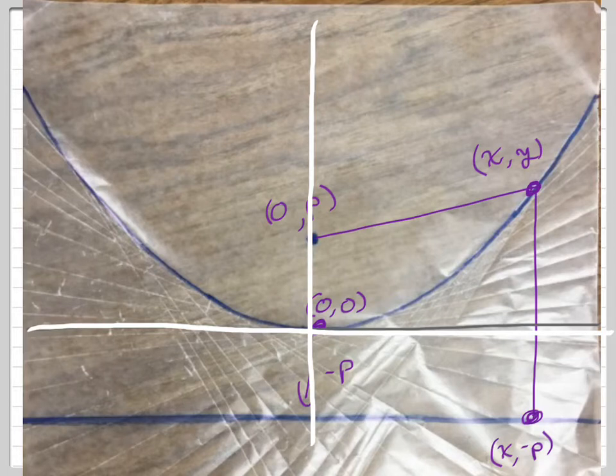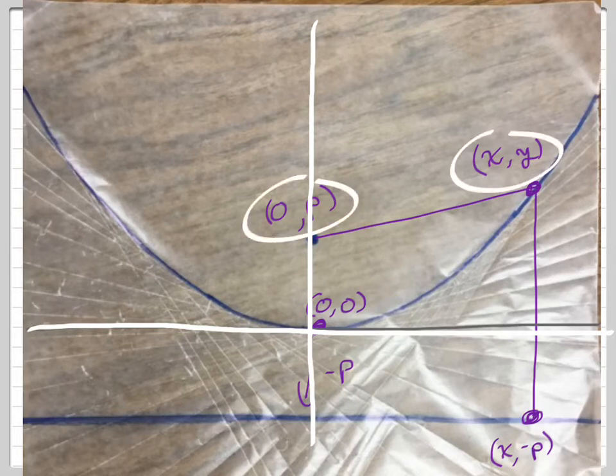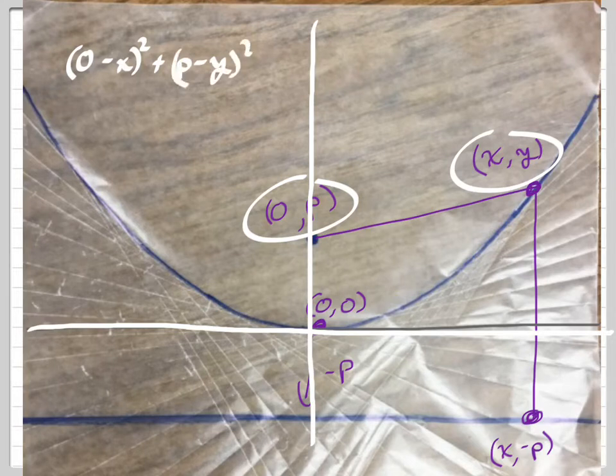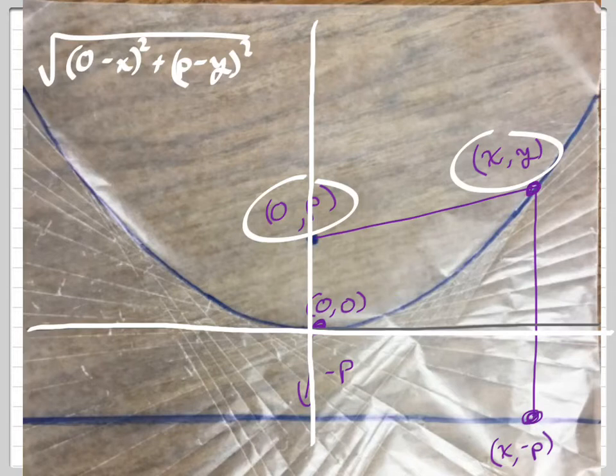So I'm making the claim that this distance is equal to this distance. So that means if I use a distance formula with these two points right here, this point and this point, I would go 0 minus x. I would square that plus, and then I do the y values. That would be p minus y. I square that, and then I square root that. That's a distance formula. I don't know if you guys remember the distance formula, but that's it right there.